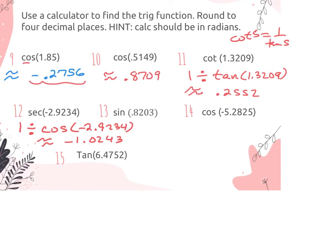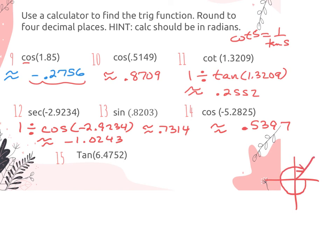Next one, cosine — we've got that button. This one's a little less than 1 radian, so it's in quadrant 1, and I should be getting positive: 73.14. Next, cosine of negative 5.28. When I do this one, I get a positive answer, because graphing a negative 5.2-radian angle goes clockwise and ends up in quadrant 1 — everything is positive there. And the very last one, tangent of 6.4752 gives me approximately 0.1944.